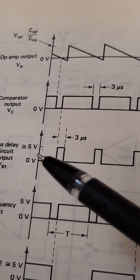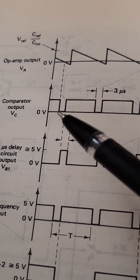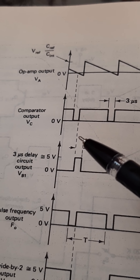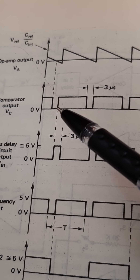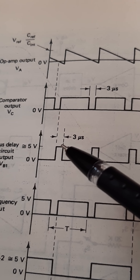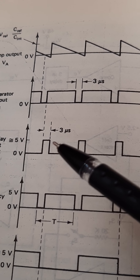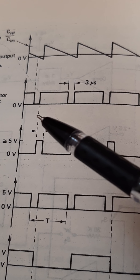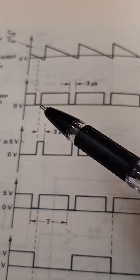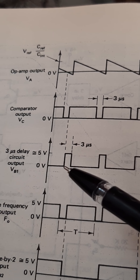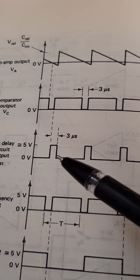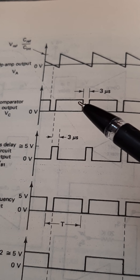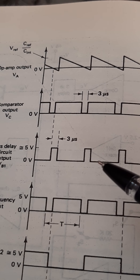When the comparator output becomes 0, the 3 microsecond delay gives an inverted output. So after 3 microseconds, the output of the 3 microsecond delay becomes high. This change is invertedly reflected by the 3 microsecond delay — after 3 microseconds there is an inverted representation.